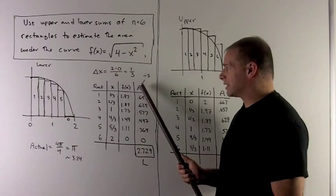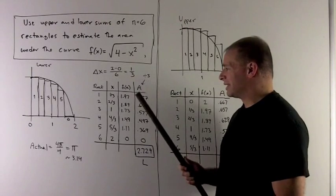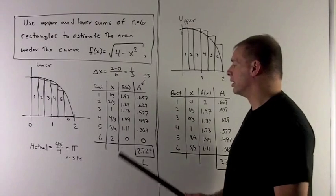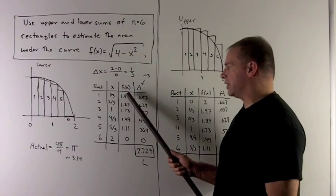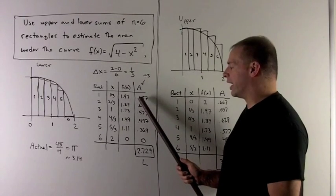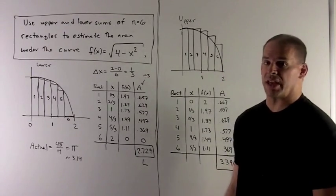To get the area of the rectangle, we take the base, which is 1 third, times the height, which is the f of x on the right side. And so that's just the same as taking each of these numbers and dividing by 3. So I get, for my first rectangle, area 0.657.